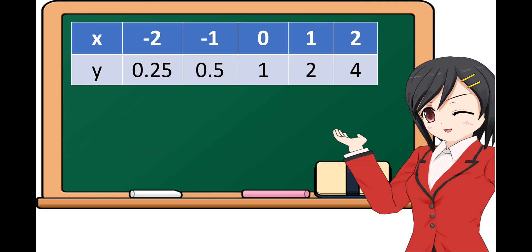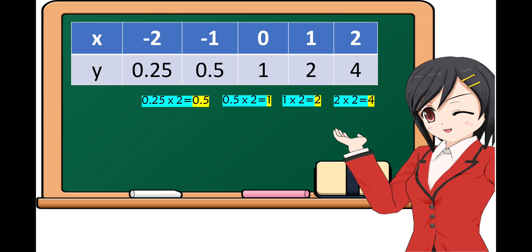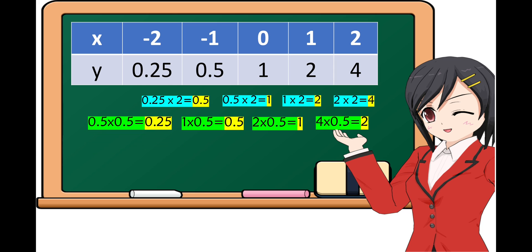From 0.25, the value of y is 0.5. From 0.5, we have 1. We multiply 0.25 by 2, so 0.25 times 2 is equal to 0.5. And 0.5 times 2 is equal to 1. And 1 times 2 is equal to 2. And 2 times 2 is equal to 4. Or, by working backward, 4 times 0.5 is equal to 2, and so on. Therefore, it has a common factor of 0.5 or one-half.